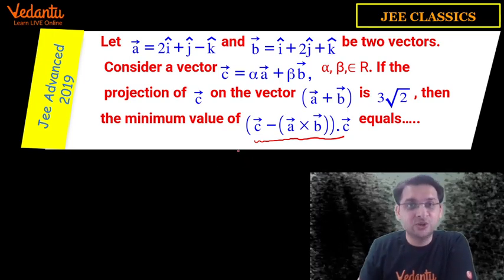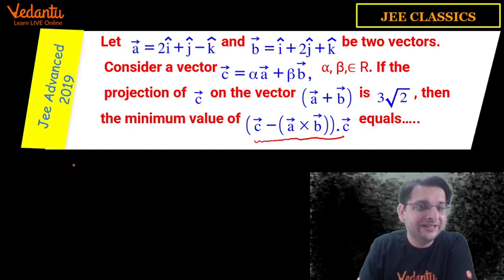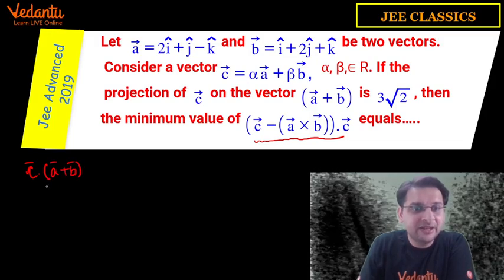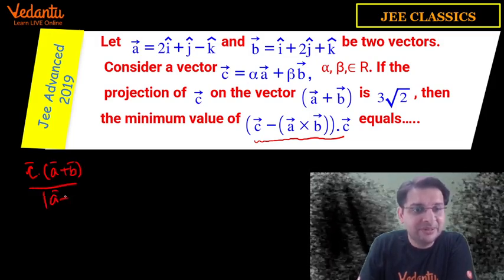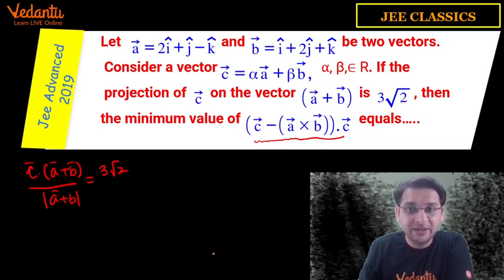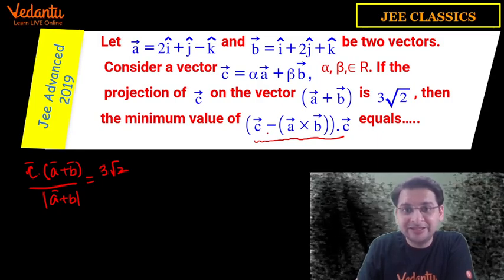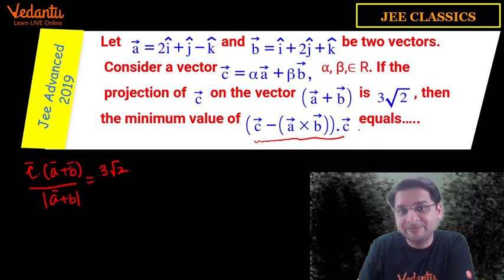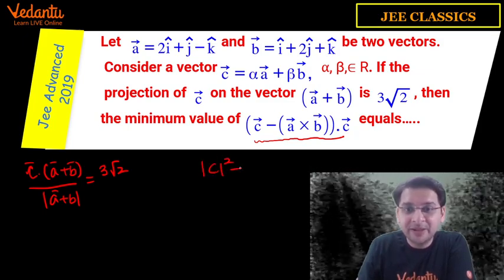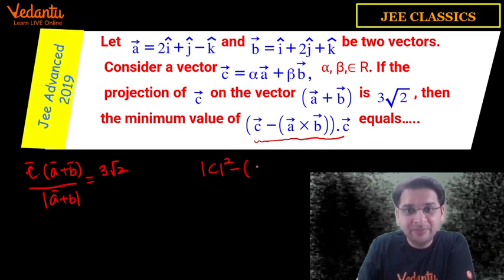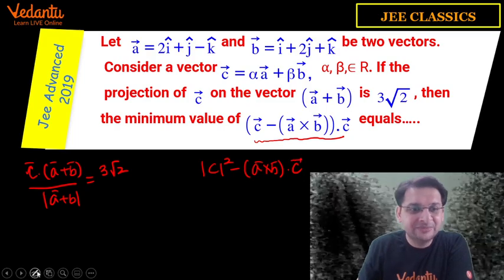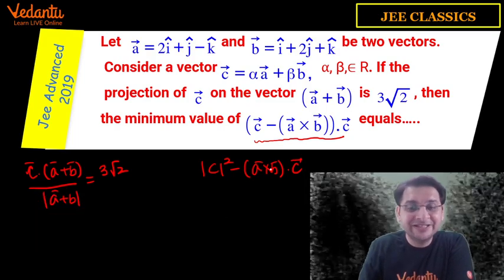How do we think about this? The projection of vector c on a + b is written as c · (a + b) divided by |a + b|, and this equals 3√2. That is one piece of information given. Now we need to find the minimum value of the expression. If we expand it, this is |c|² minus (a × b) · c, which simplifies as we work through it.